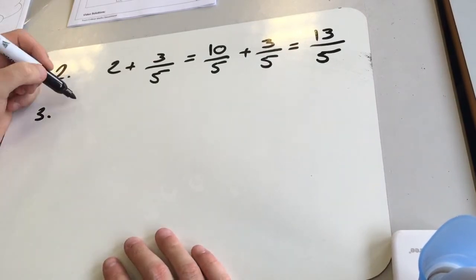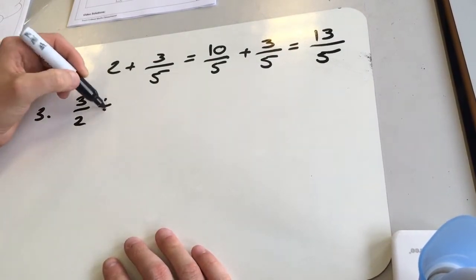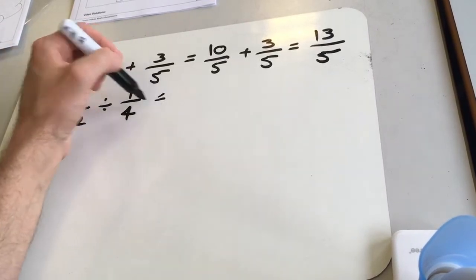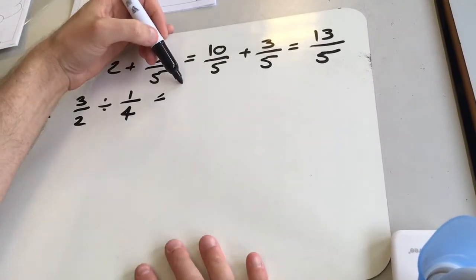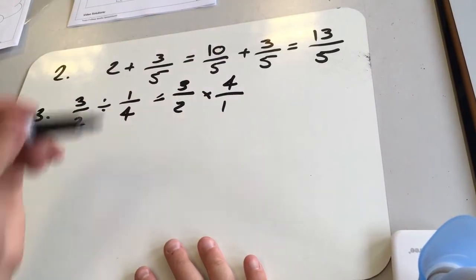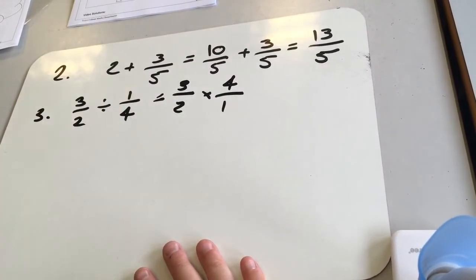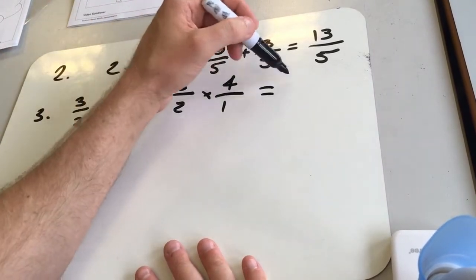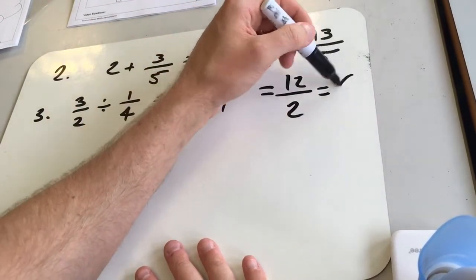Next question, 3 over 2 divided by 1 over 4. So when you're dividing by fractions, you're going to flip the second fraction, so it's going to be the same as 3 over 2 times 4 over 1. And then we can just times along the tops and times along the bottoms, so you get 12 over 2, which is 6.